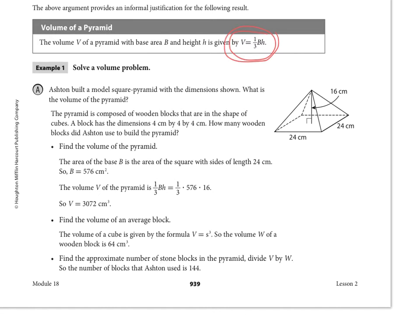So it's a couple steps. First, we're going to figure out what the volume of the pyramid is, then we're going to find the volume of an average block, and then we're going to divide the two things and figure out how many blocks are in the pyramid.